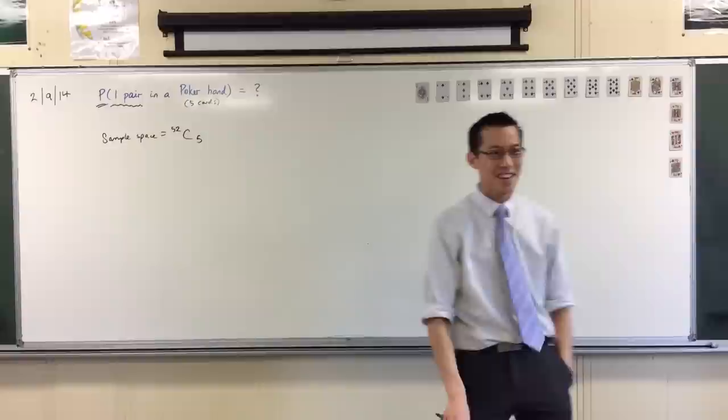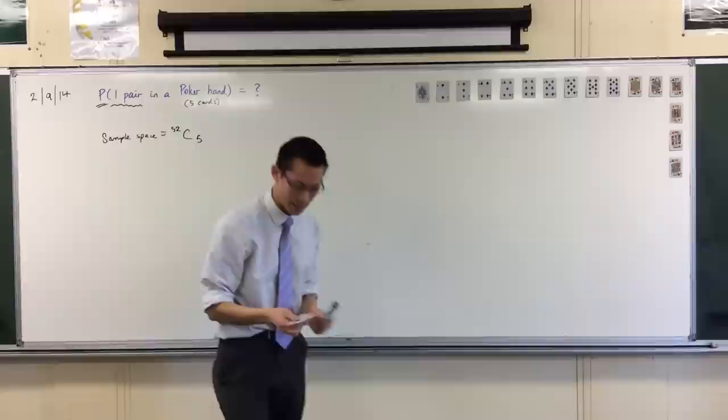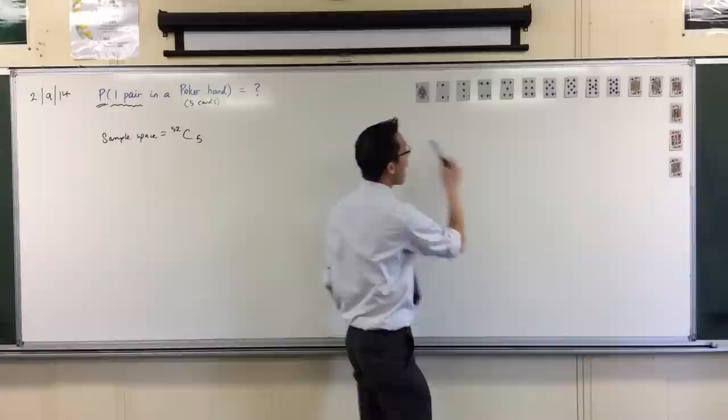Now, we have some cards here. I could have set out all 52. I do have a deck here. I think it's complete, but anyhow. I think there's enough here that you can see what's going on. 52 cards, right? You've got, if you can't quite see it, these are the four suits going down.